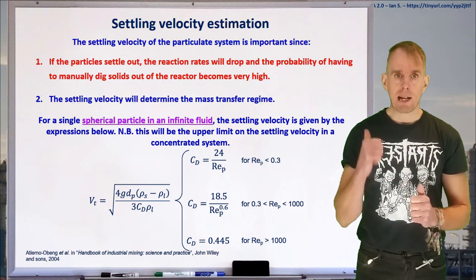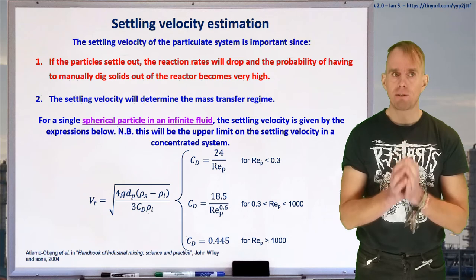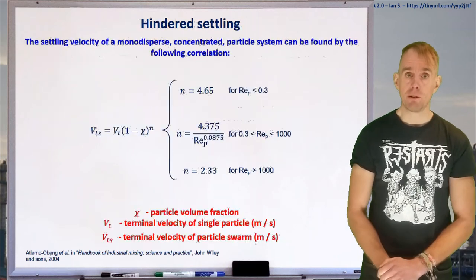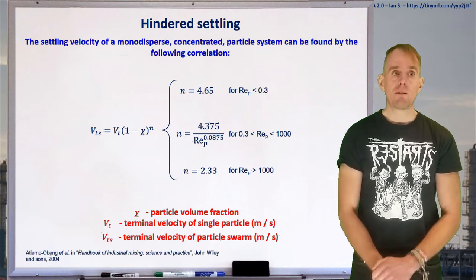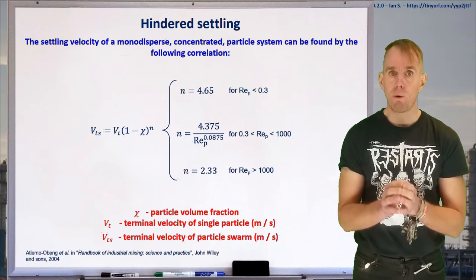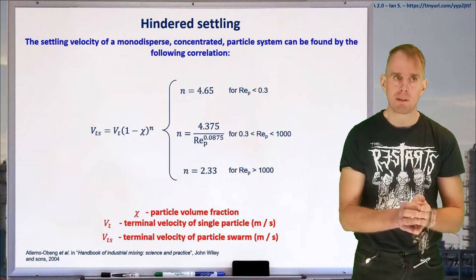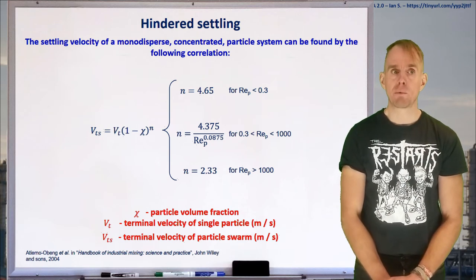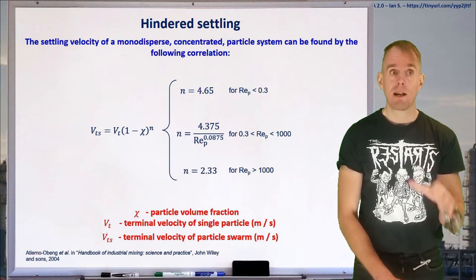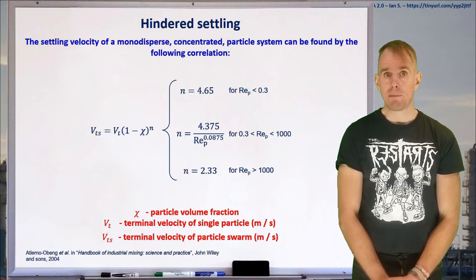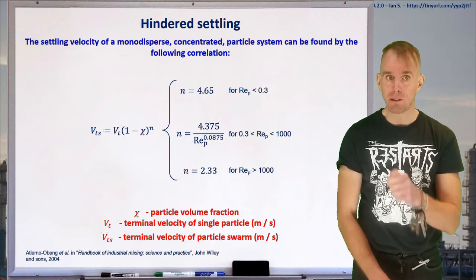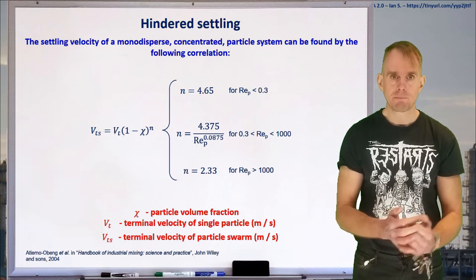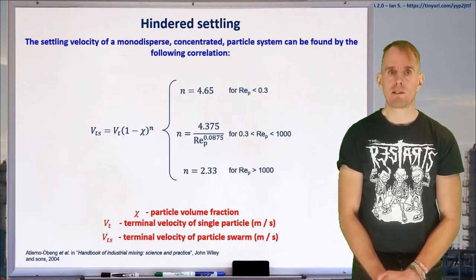However, this is the first step in a two-step workflow, because the next thing we're going to do, much in the same way as we did with Richardson and Zaki, is to estimate the terminal velocity of the particle swarm based on the terminal velocity of a single particle. And so, this correlation here for hindered settling does exactly that. We've got our particle volume fraction as one of the parameters we need, along with the terminal velocity of a single particle. That power n there depends on the particle Reynolds number, which, of course, also depends on the terminal velocity of a single particle. So, be careful how you evaluate these terms.